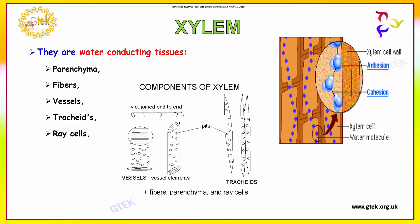In between the adenosines, this portion is called coosine. This is the xylem cell and this is the water molecule. This part looks like a vessel, so it is called the vessel element. It consists of parenchyma and rays. This dotted portion is called pith. You can see the xylem here.